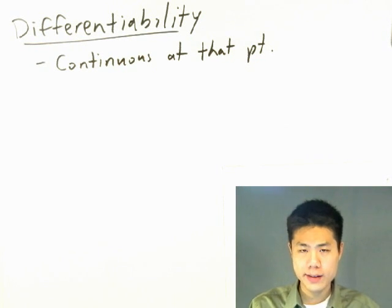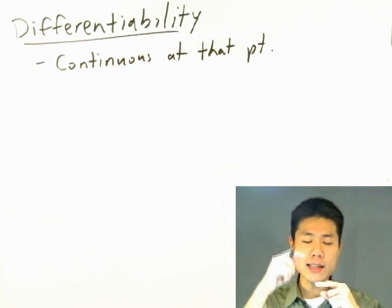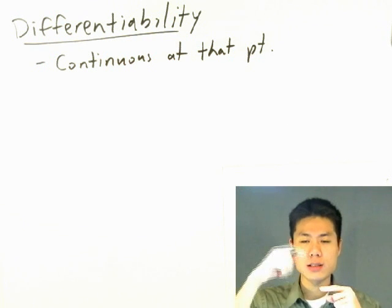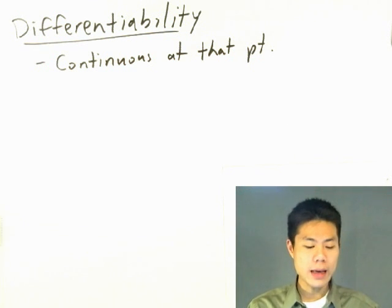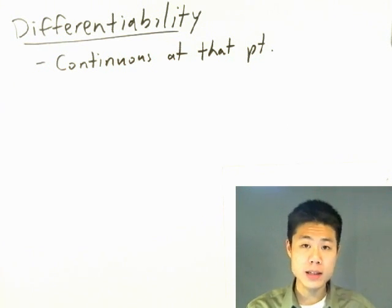If you think about it, if there's a break or discontinuity in a graph, you can't find the slope across a break. So the graph has to be continuous at that point for the graph to be differentiable. That's the first condition.